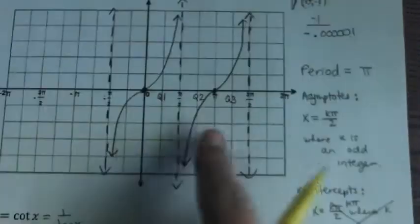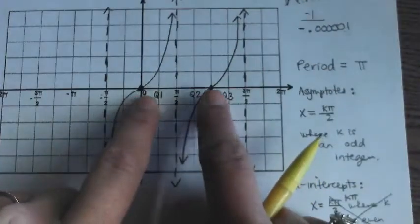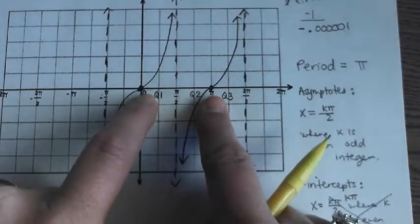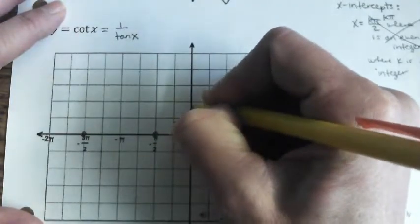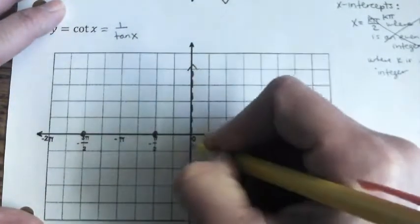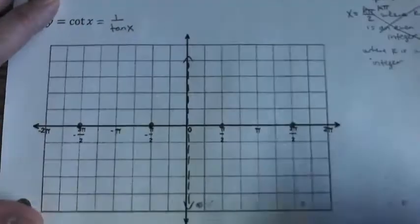And where our 0s used to be at the full pi values, what happens when you reciprocate 0? Becomes undefined. So we have asymptotes now at the full pi values.